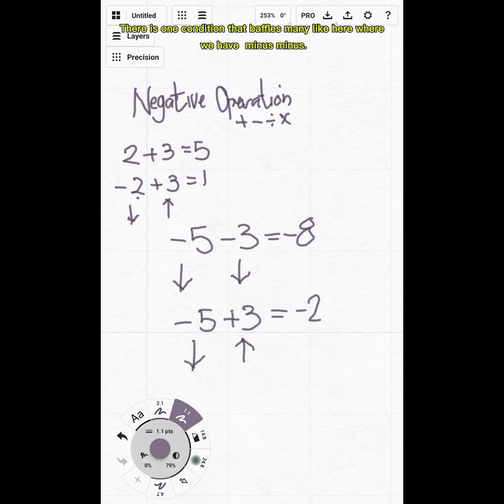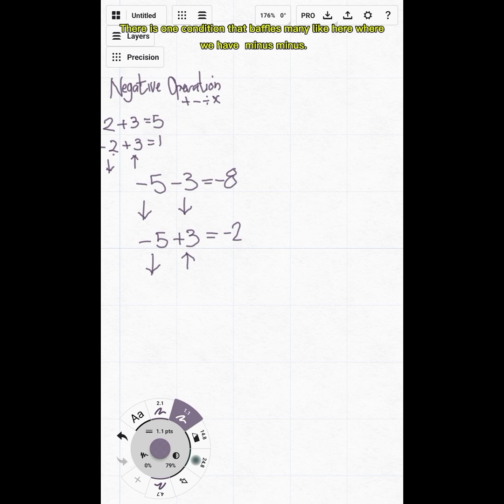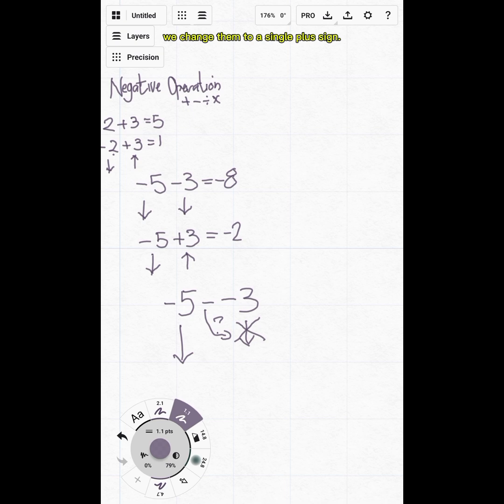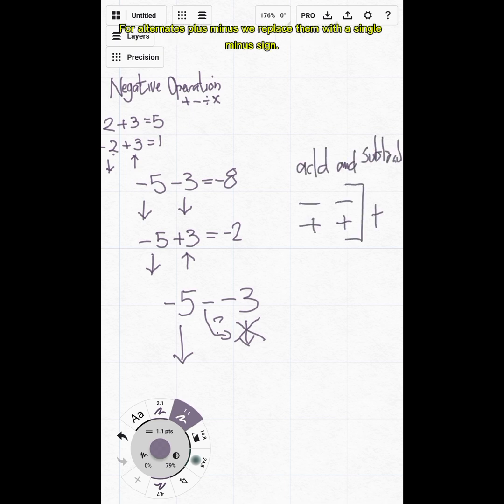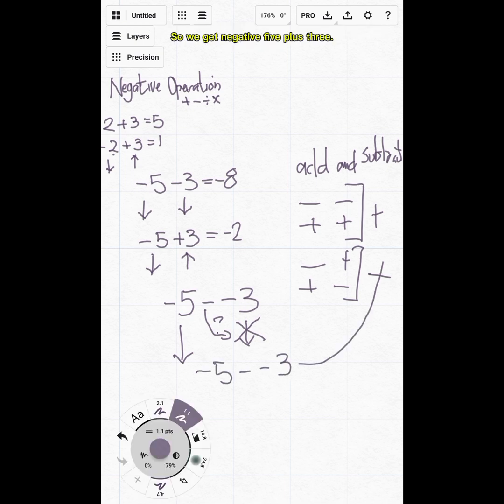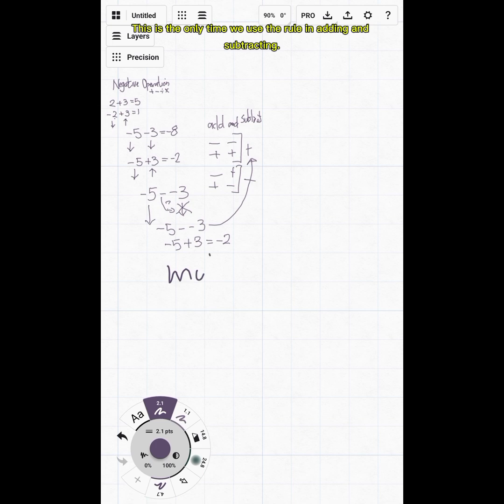There is one condition that baffles many, like here where we have minus minus. For plus and minus double parking like that, we have a rule. If the symbols are the same (minus and minus, or plus and plus), we change them to a single plus sign. For alternates (plus minus), we replace them with a single minus sign. So we get negative five plus three. This is the only time we use the rule in adding and subtracting.